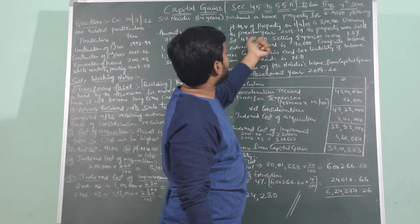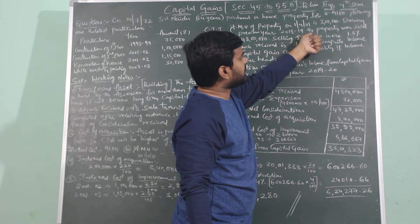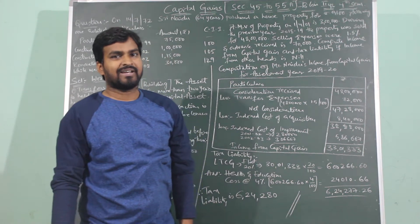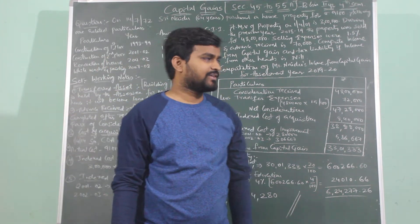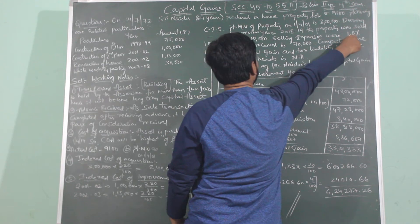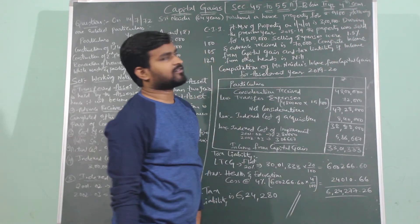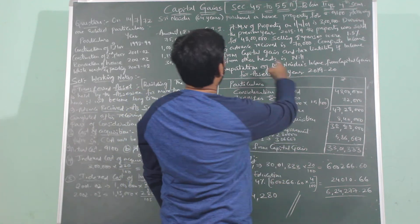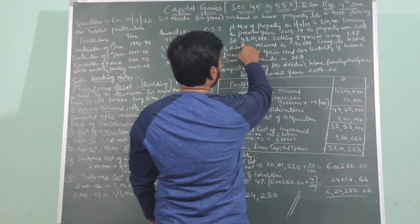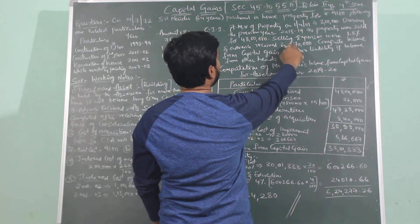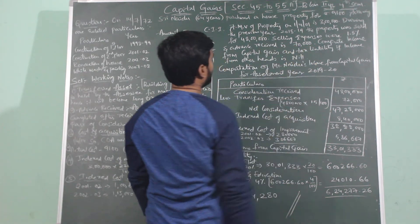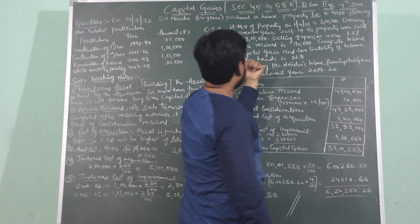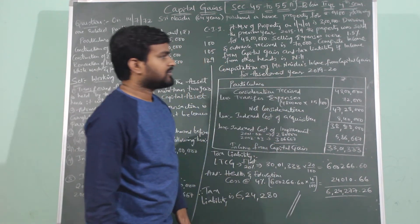During the previous year 2018-2019, the property was sold for Rs. 48 lakhs, which is the consideration received. Selling expenses are 1.5%, calculated on consideration received. An advance of Rs. 70,000 was also received. Compute income from capital gain and tax liability if income from other heads is nil.